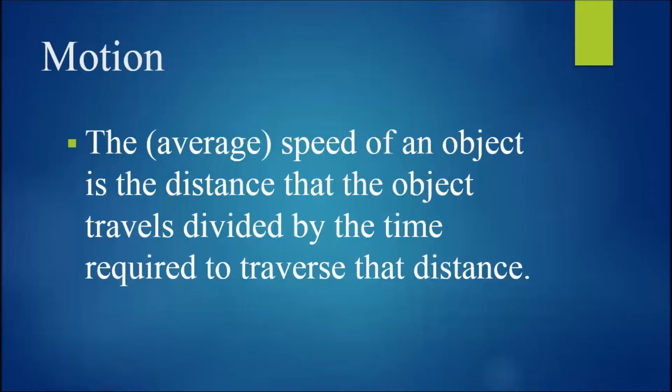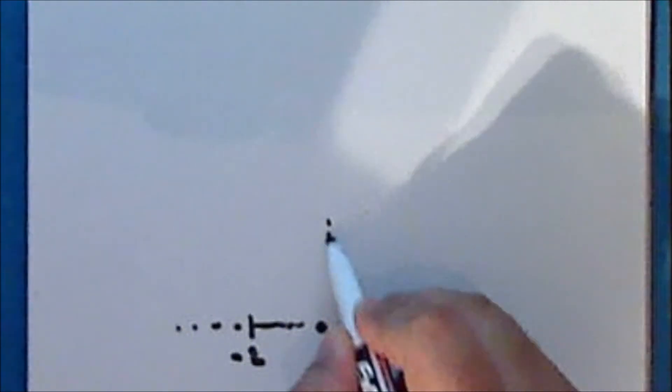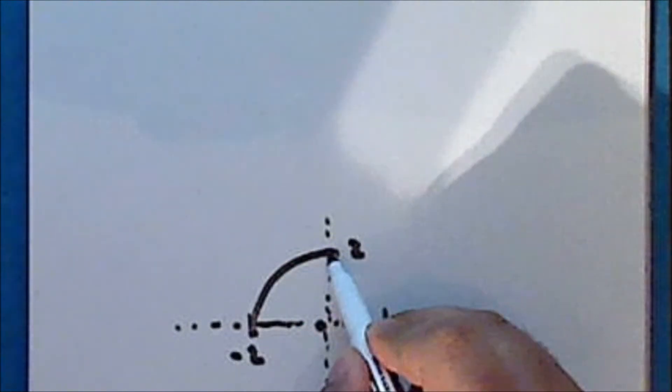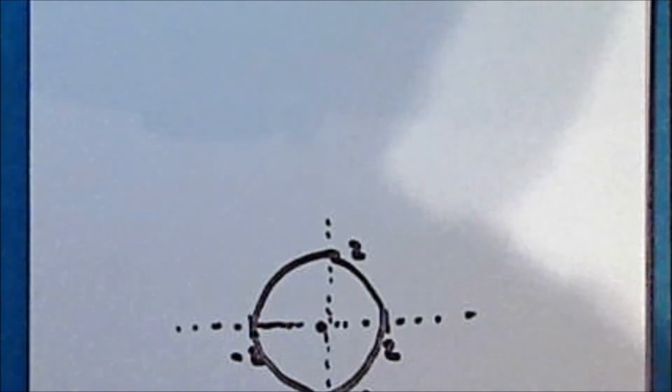Notice that if I describe the motion of an object by its speed alone, I have only given a partial description that does not allow me to predict its location after an elapsed amount of time. For example, suppose I have a particle moving at a constant speed of 2 meters per second. If this particle is free to move in only one dimension, then after one second it can either be located 2 meters to the right or 2 meters to the left of its initial location. If this particle is free to move in two dimensions, then after one second it can be located anywhere on the circle centered at its initial location with radius 2 meters.